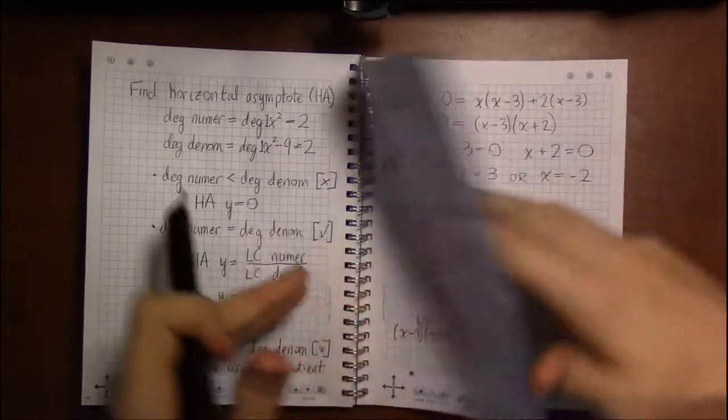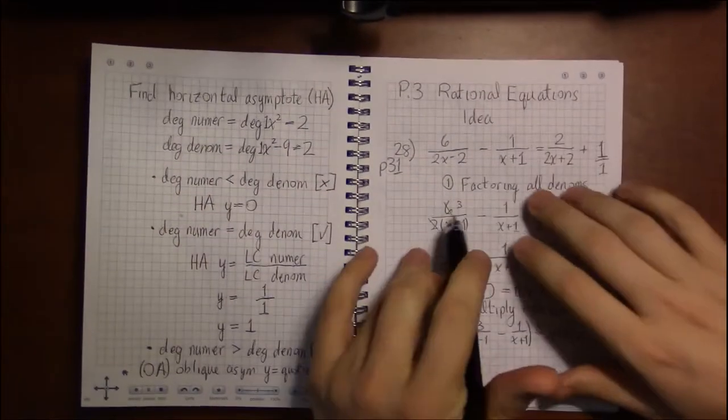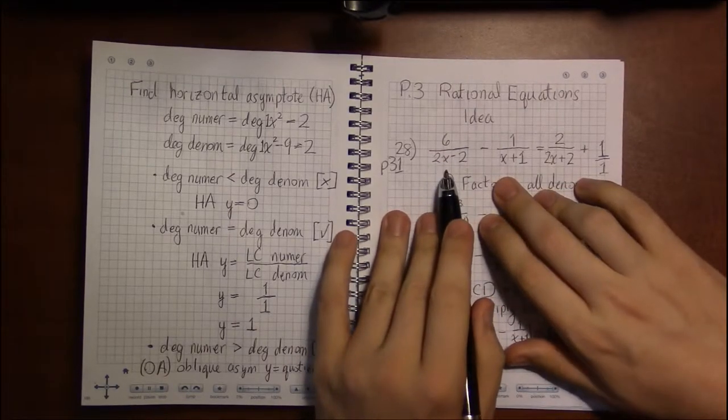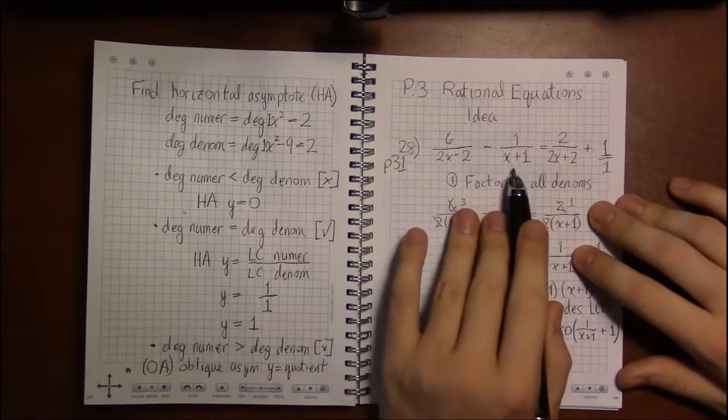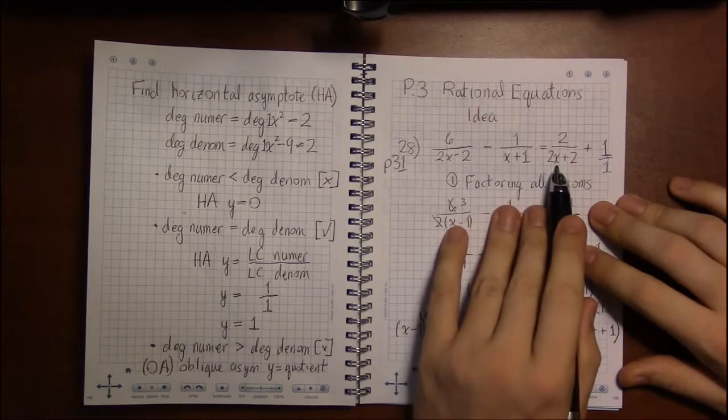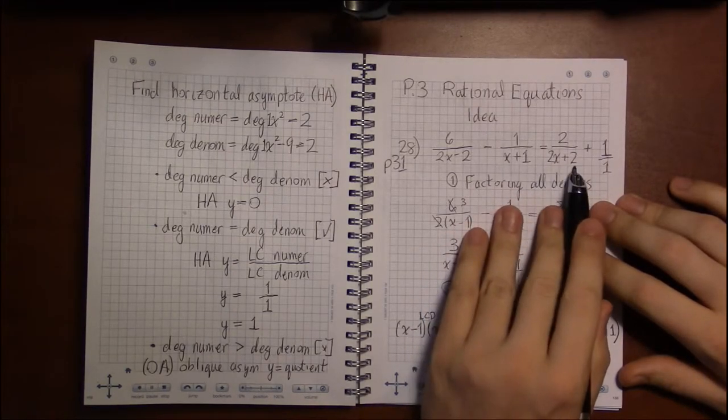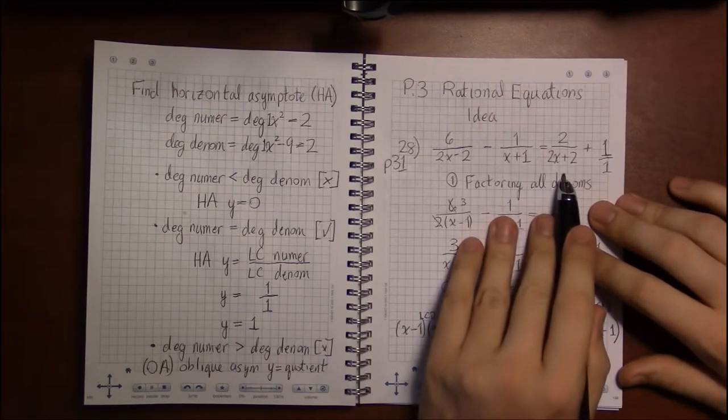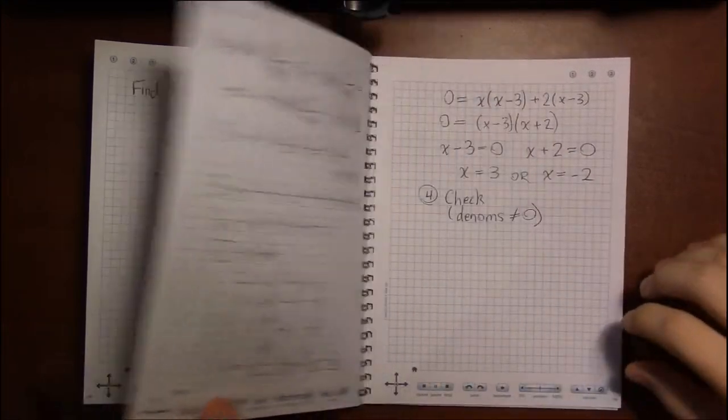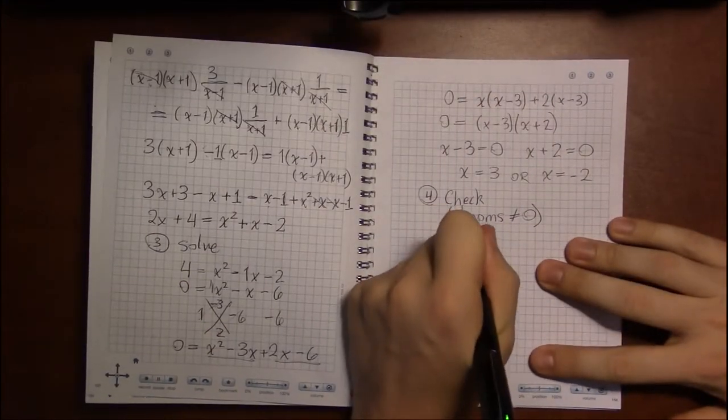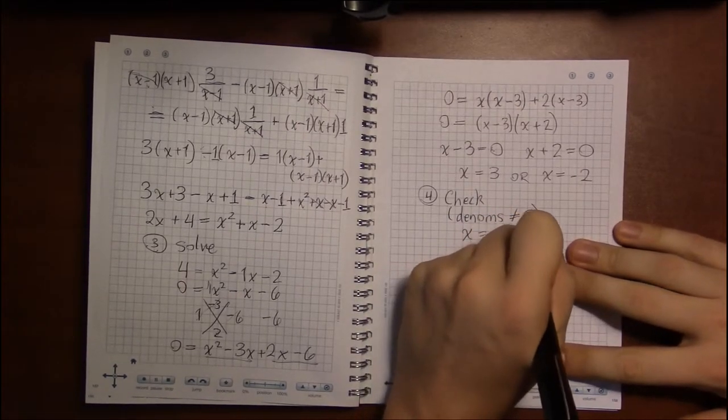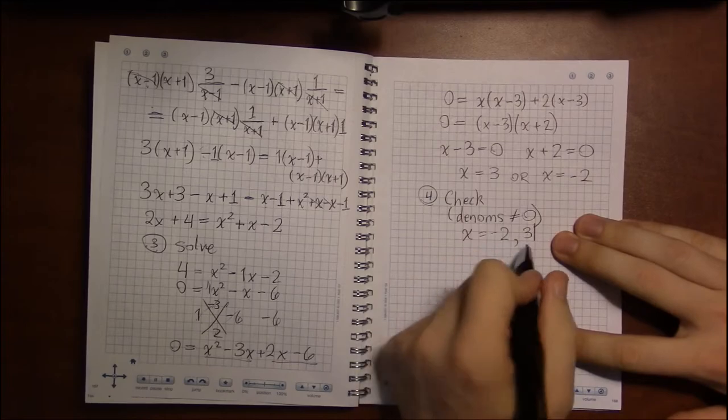What was the other one? The other one was minus 2. Plug in minus 2. 2 times minus 2 is minus 4, minus 4 minus 2 is minus 6, that's not 0. Minus 2 plus 1 is minus 1, that's not 0. 2 times minus 2 is minus 4, minus 4 plus 2 is minus 2, that is also not 0. And 1 isn't 0, so both work. We could have x being minus 2 or we could have x being 3. And that's the basic idea of rational equations.